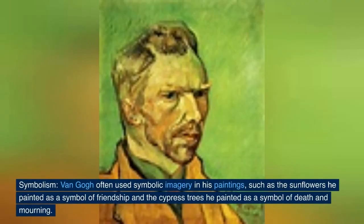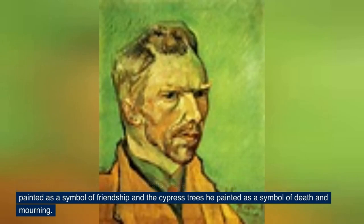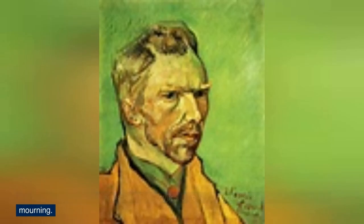Van Gogh often used symbolic imagery in his paintings, such as sunflowers painted as a symbol of friendship, and cypress trees as a symbol of death and mourning.